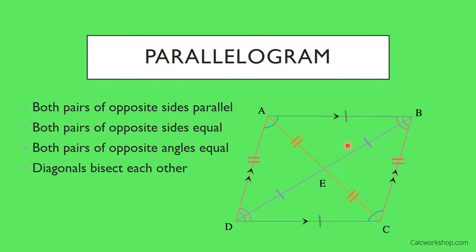For the parallelogram's diagonals bisecting each other: where the two diagonals intersect, each half-diagonal is equal in length to its opposite half. So the segments marked with one stripe are equal to each other, and the segments marked with two stripes are equal to each other.